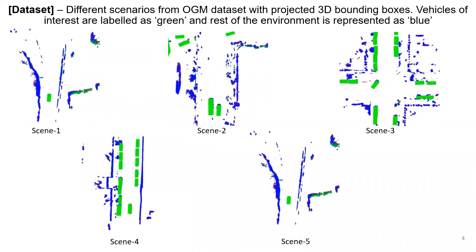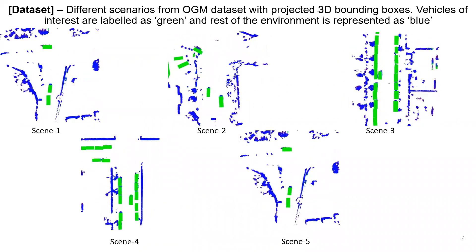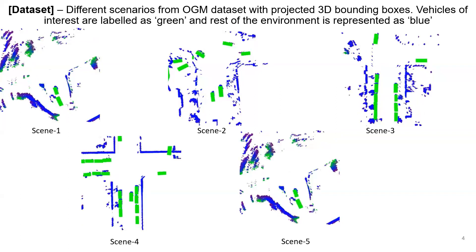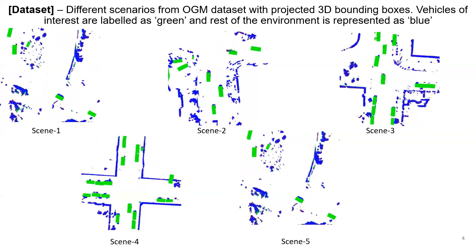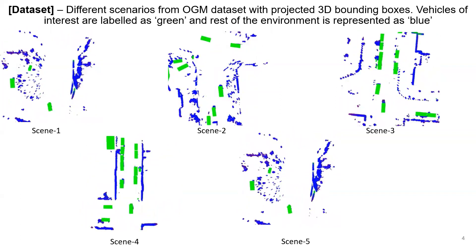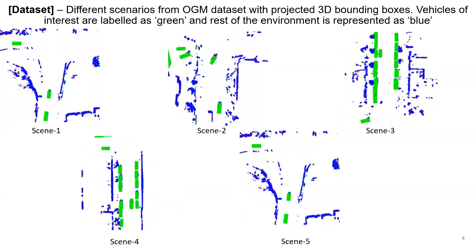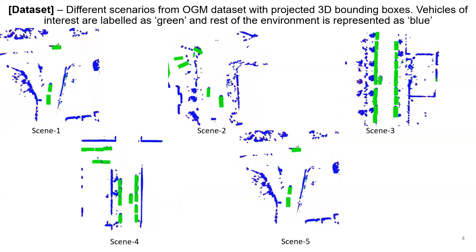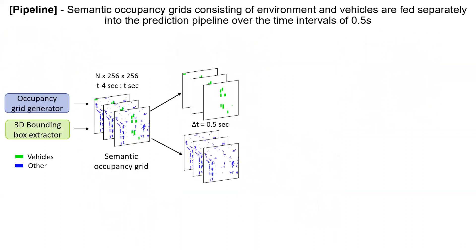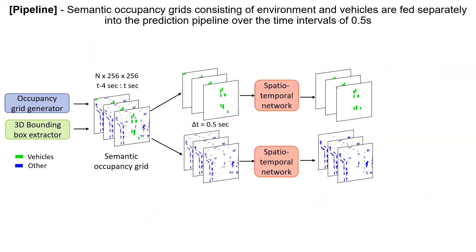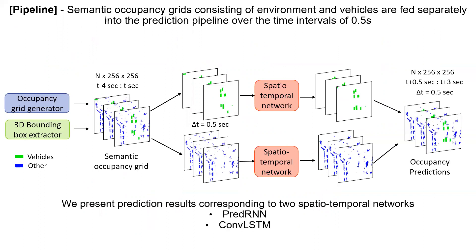We demonstrate different types of real-world scenarios present in the dataset. Vehicle objects of interest are labeled as green while the rest of the environment is represented as blue. In our pipeline, we initially separate the occupancies characterized by vehicles from the environment. These are later fed into two parallel schemes of spatial-temporal networks that are trained simultaneously for generating future three-second predictions.